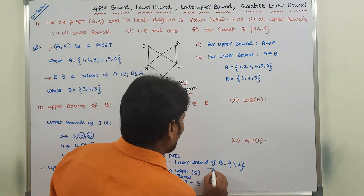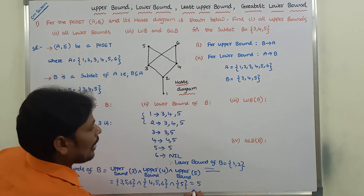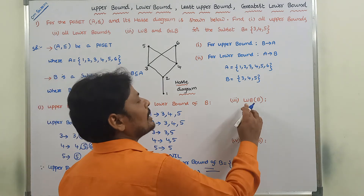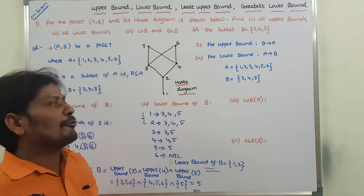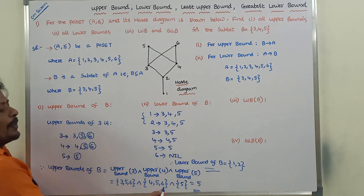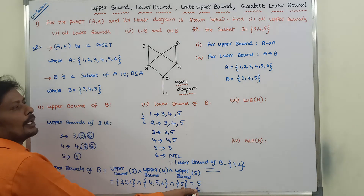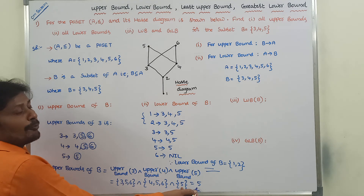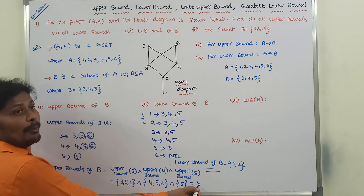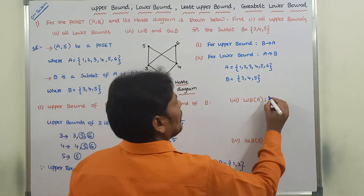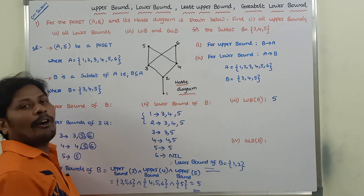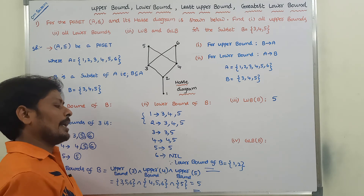What is the least upper bound of B? Once we find the upper bound, the least upper bound is determined. The upper bound of B contains only one unique element, so it becomes the least upper bound. Therefore, least upper bound of B = 5.